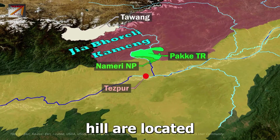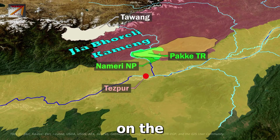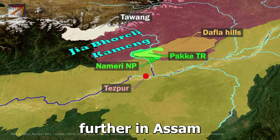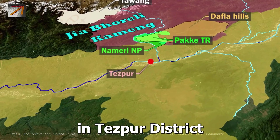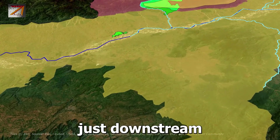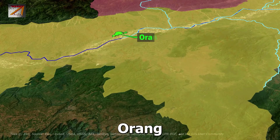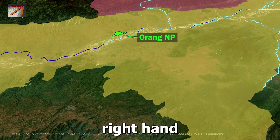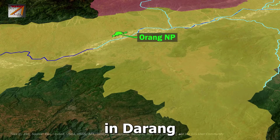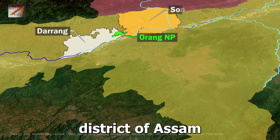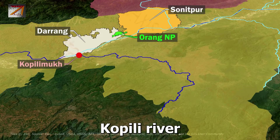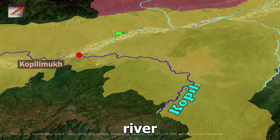The Dafla hills are located on the eastern side of Kameng River. The river flows through Assam and meets Brahmaputra in Tezpur district. Just downstream, Orang National Park is located on the right bank of Brahmaputra in Darrang and Sonitpur district of Assam. At Kopilimukh, the Kopili River meets Brahmaputra.